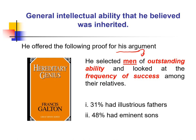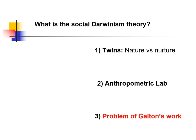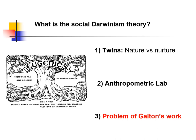This was one type of proof he showed for his argument. He selected men of outstanding ability and looked at the frequency of success among their relatives. For example, 30 percent of illustrious fathers had a 48 percent chance of having eminent sons. He considered that if a father was very smart, it was very likely that their children would also be very smart.